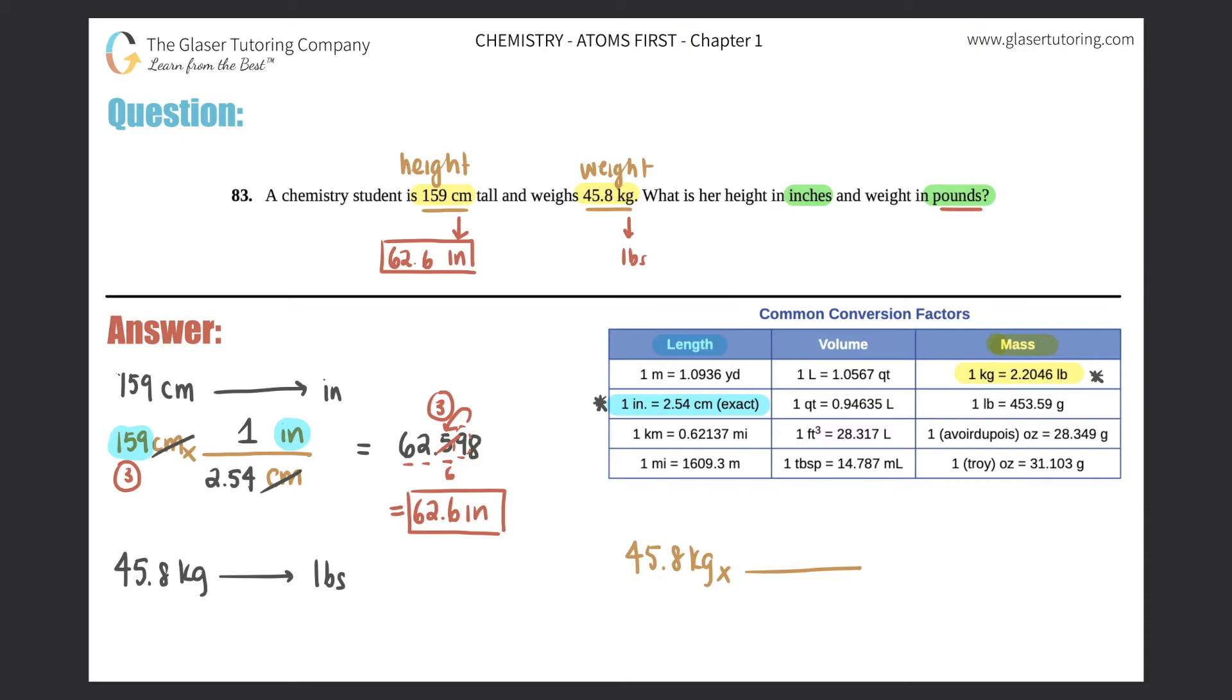Let's get going. 45.8 kilograms times by a ratio. Kilograms goes on the opposite side, pounds goes up on top. According to this, one kilogram equals 2.2046 pounds. Kilograms cancel out, you are left with pounds, which is what we want. So we just got to do the math: 45.8 times 2.2046, and we get basically 100.97 pounds. But we need the correct number of sig figs. There are three sig figs here, so my answer should have three sig figs at the end. So 100, but then the nine rounds the zero up to a one, so it would be 101 pounds. And that is your final answer.